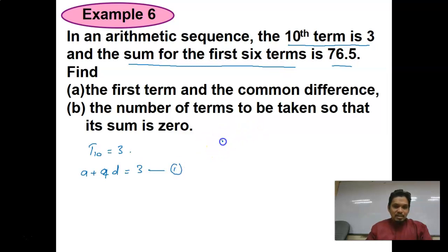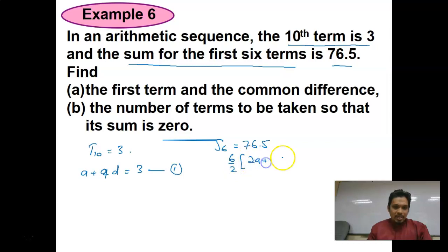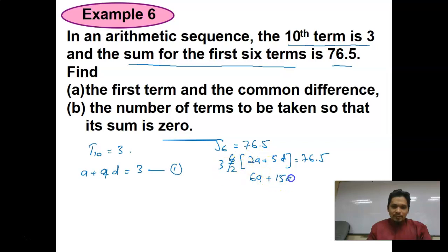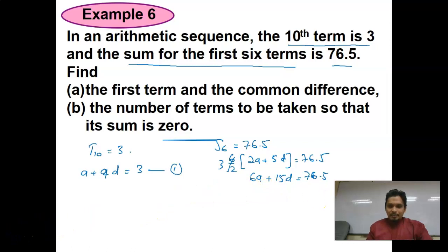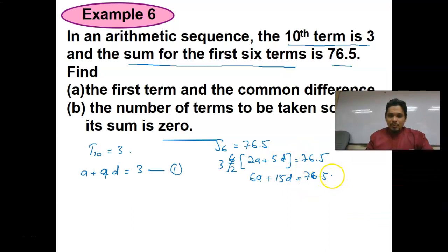The sum of the first 6 terms = 76.5: (6/2) × [2A + (6−1)D] = 76.5. This gives 3 × (2A + 5D) = 76.5, so 6A + 15D = 76.5 (Equation 2). We now have two equations.